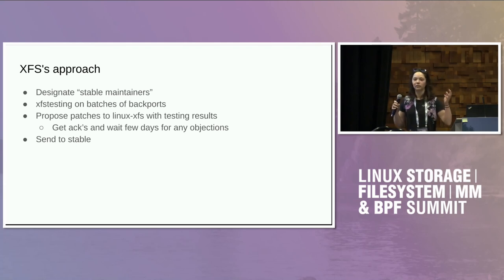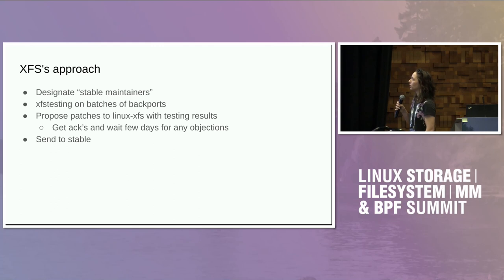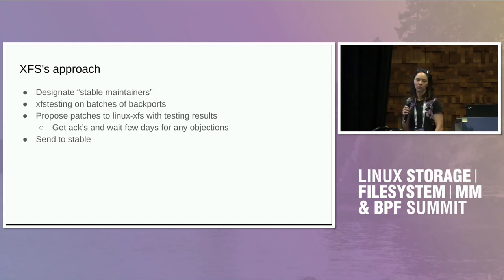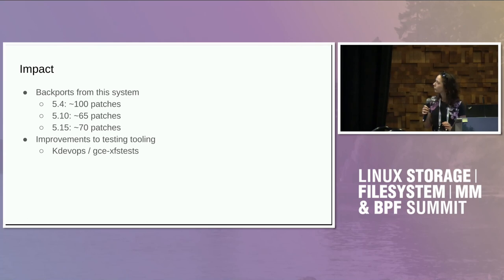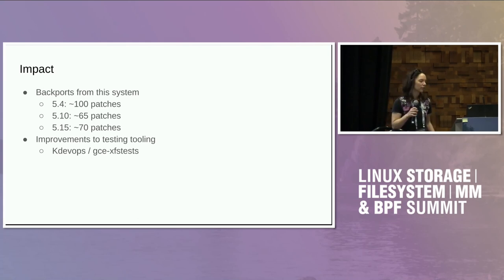What we've been doing is pretty simple: just designate one person per tree, so someone can be more familiar with that specific stable tree and keep an eye on things. We group things into batches, run a set of tests on them, and send it out to the Linux XFS mailing list with the testing results. Everyone can take a look, get some people to sign off on it, and if no one objects, send it to the stable list. Impact — several hundred patches have already been backported through this. There have also been improvements to both KDevOps and GCE XFS tests, which are the primary testing used for backporting.